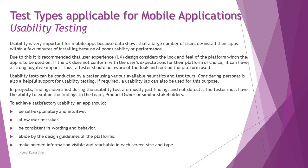Considering personas is also a helpful support for usability testing. A usability lab can also be used for this purpose. Heuristics are basically design reviews — reviewing the design for user friendliness, experience, and interface. We have test tours where we ask real users to interact with the app or simulate a real user while testing requirements. In a usability lab, you can invite real users to come and interact with the product and share their feedback.